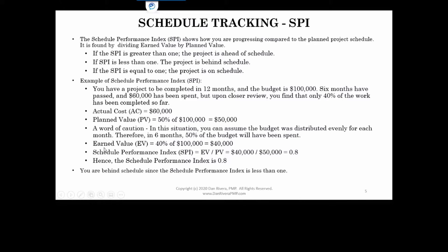When this is the case, your earned value will be 40% of the total project budget of $100,000, which gives you $40,000. This 40% is derived from the fact that 40% of the work has been completed so far. Then the Schedule Performance Index is the earned value of $40,000 divided by the planned value of $50,000, which gives you 0.8. That ratio tells you that you are behind schedule, because the SPI is less than one.